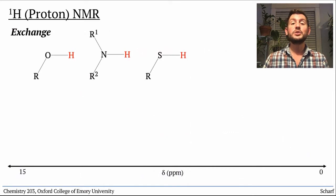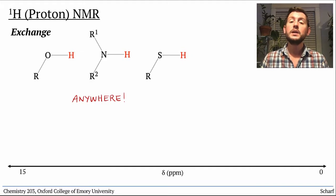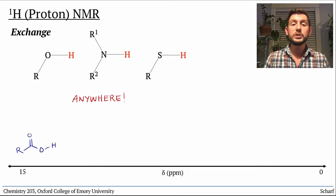Hydrogen atoms bonded to heteroatoms, O, N, or S usually, can be found anywhere in the spectrum and are extremely difficult to predict. Carboxylic acids are the most reliable and can usually show up very downfield around 14 or 15 ppm.